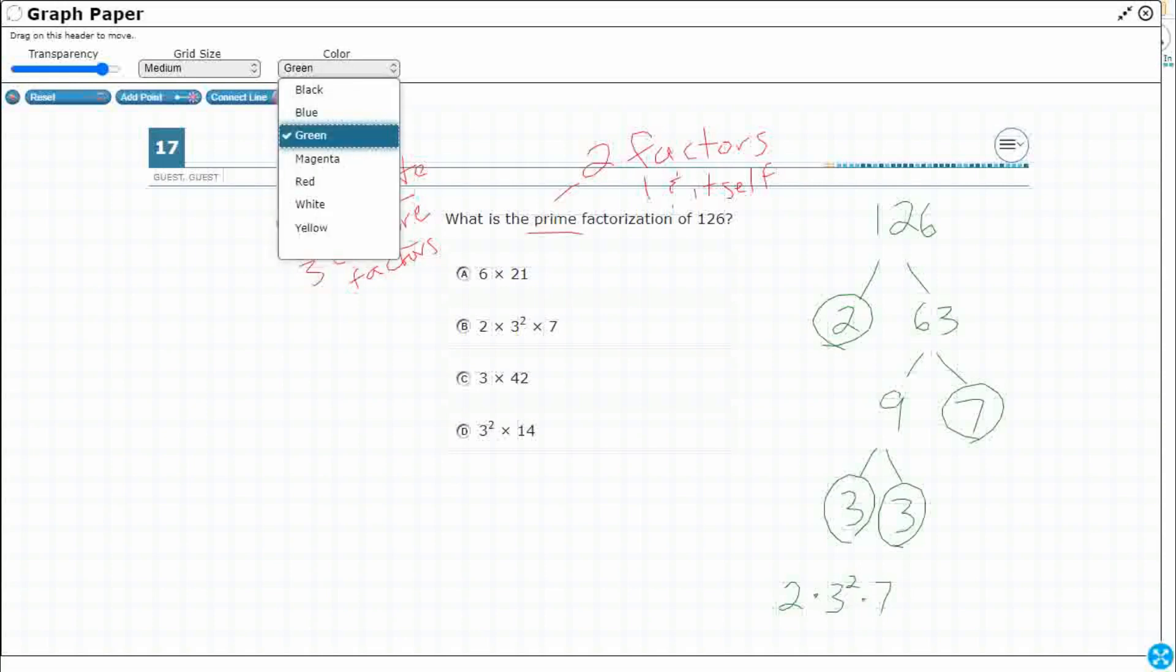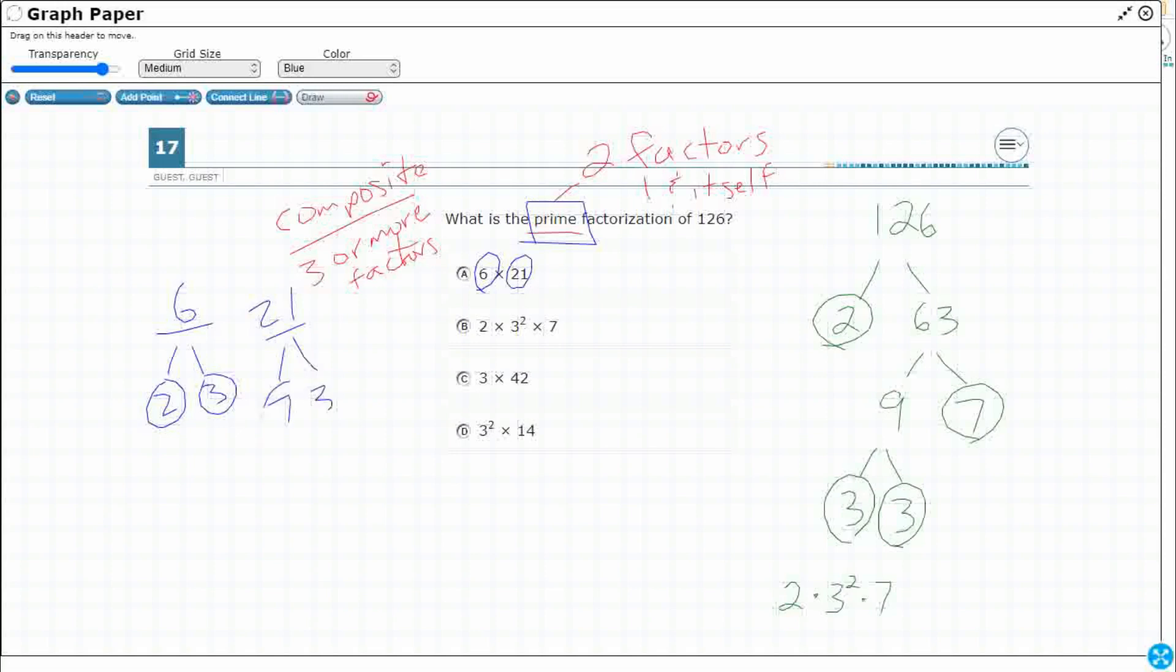Now, why was that so easy? Well, here's the problem. I wanted prime numbers. Check out six. Six is not prime, because I can get six with two times three. A prime number, the only way you can get to that number is one times itself, which means six is not prime. Neither is 21. I can get to 21 by seven and three. So, both of those are composite, which means it's not a prime factorization.